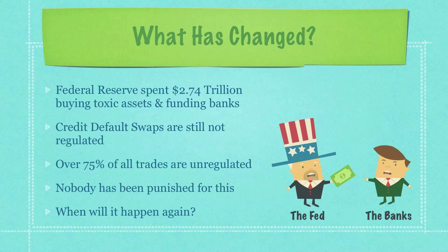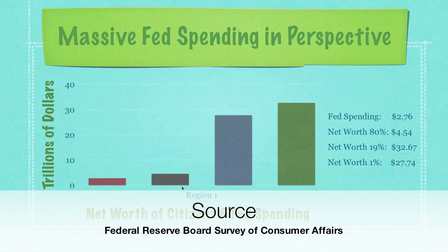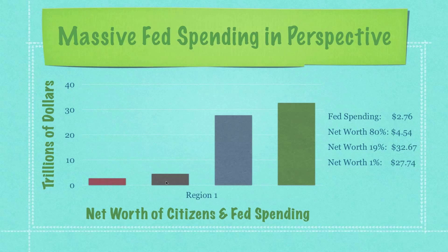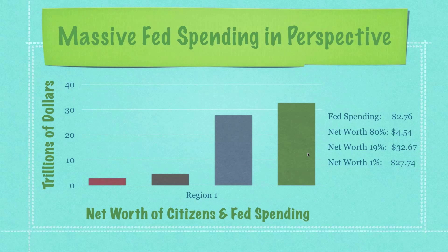So simply what you have to ask yourself is: when will it happen again? To put the Fed's $2.76 trillion payout into perspective: the entire net worth — all assets minus all liabilities — for the bottom 80% of Americans equals $4.54 trillion. That means the Fed paid out over 60% of the entire net worth of the bottom 80% of Americans. And the total net worth of the top 19% and top 1% in the United States is $27.74 trillion.